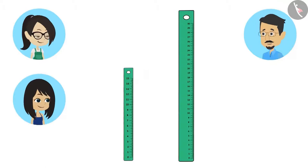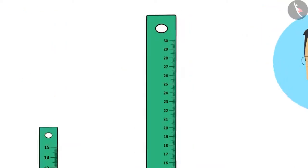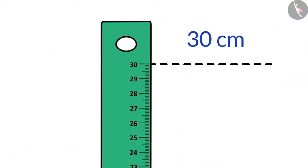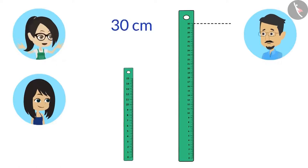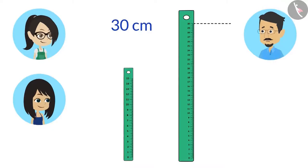Now look at this scale and tell me: objects of what length can be measured using this scale? Papa, it has a mark up to 30 centimeters on it. That means it can measure objects up to 30 centimeters in length, right? Absolutely right.